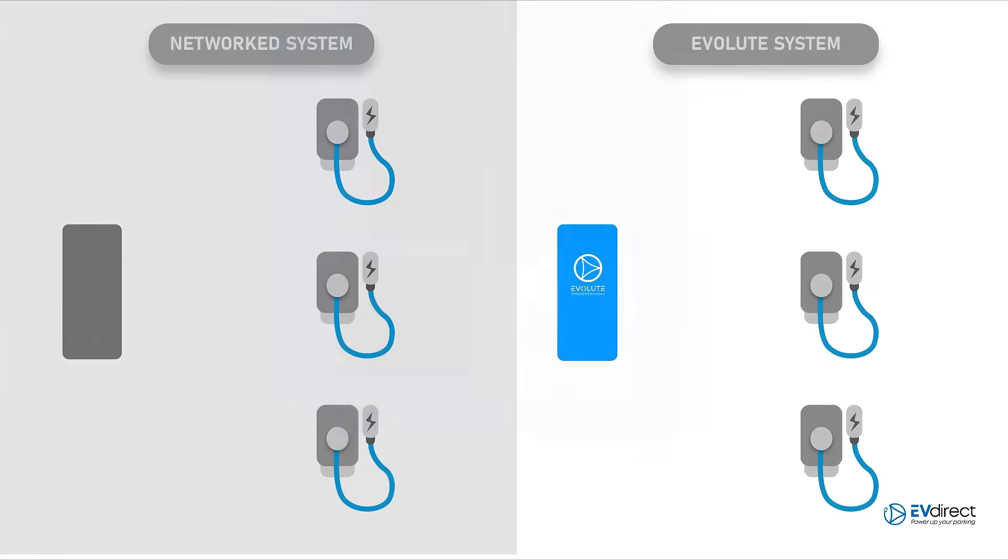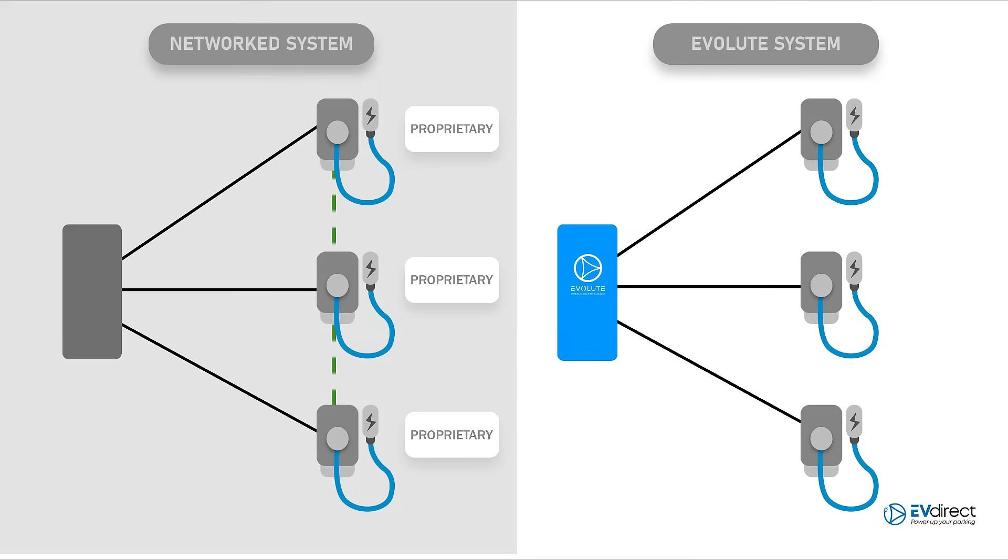So what's the difference? With network systems, you are forced to choose from a limited selection of proprietary or OCPP charging stations. But with the Evolute by EV Direct, you can use any Level 2 charging station, including Tesla wall connectors and all NEMA receptacles. You can even plug in a toaster if you wanted, since all of the brains are in the panel.